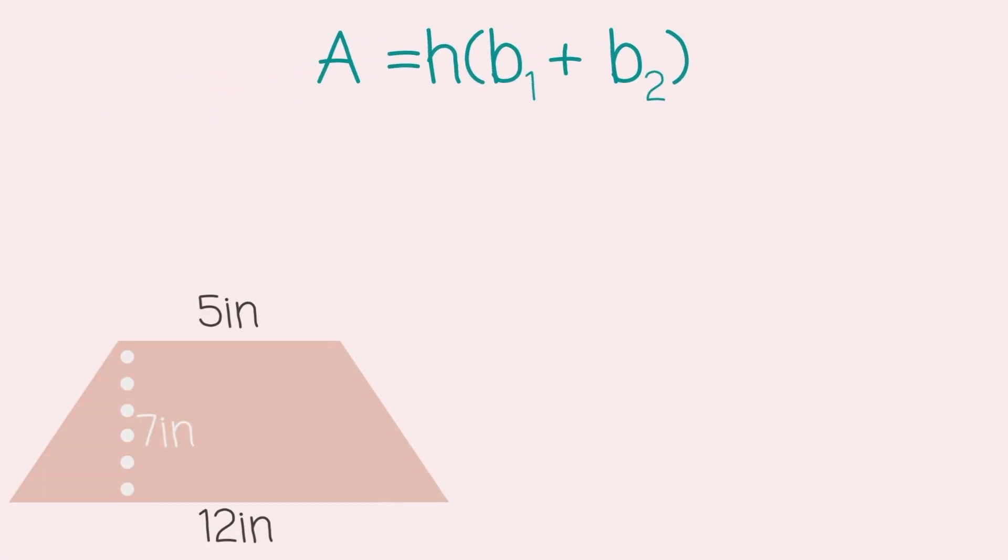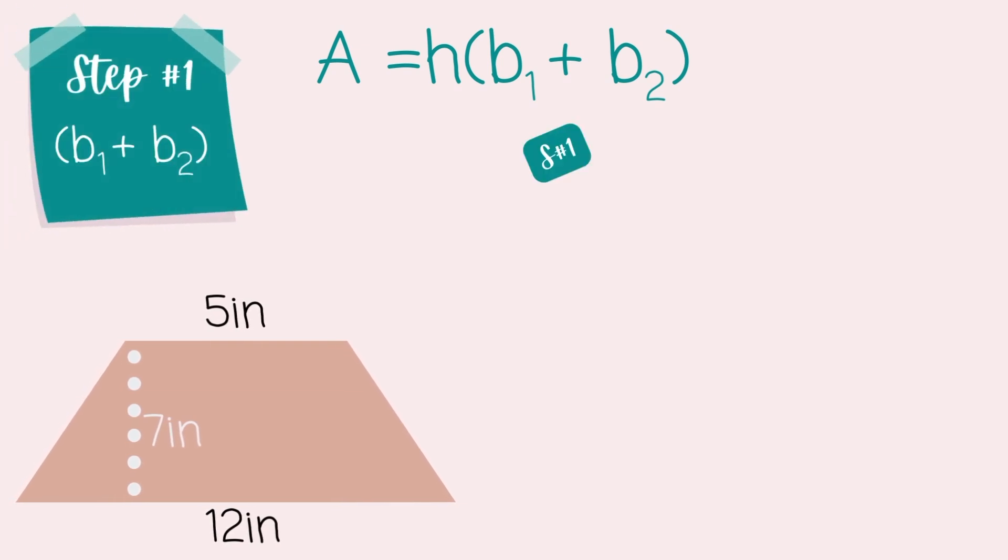So, let's go into our first equation. The formula is at the top. Step 1, we're just going to do base 1 plus base 2. So, find those parallel sides. We're adding 5 plus 12, and that equals 17.